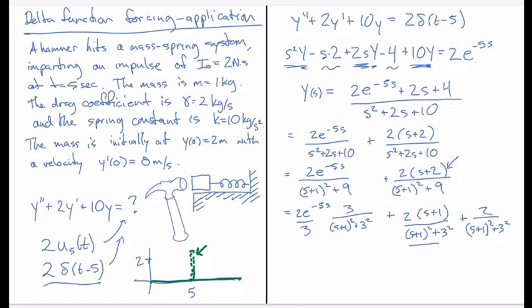And this one just needs a little bit of work. In particular, we have a 3 here as the omega, which means we need a 3 instead of a 2 up there. So I am going to multiply this by 3 and divide by 3. And so when I do that, I'm going to get 2 over 3e to the minus 5s, 3 over s plus 1 squared plus 3 squared plus 2 times s plus 1 over s plus 1 squared plus 3 squared plus 2 over 3 times 3 over s plus 1 squared plus 3 squared.